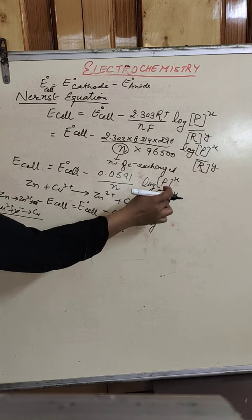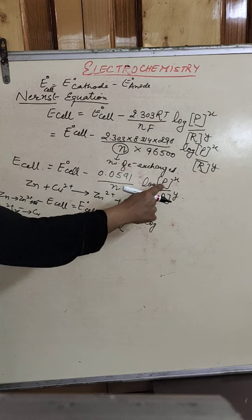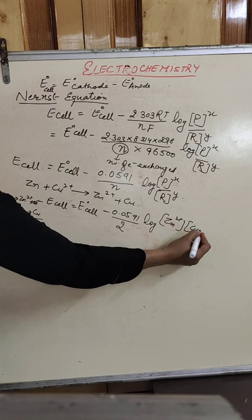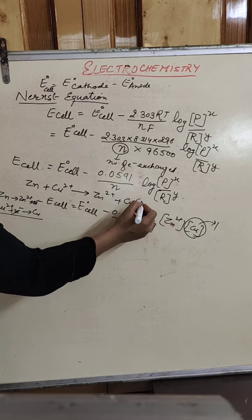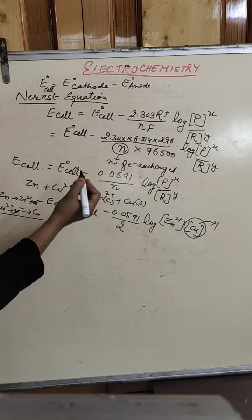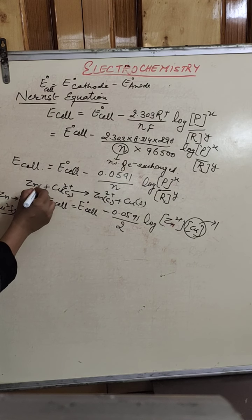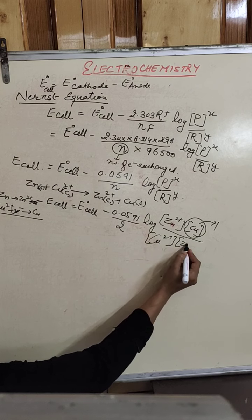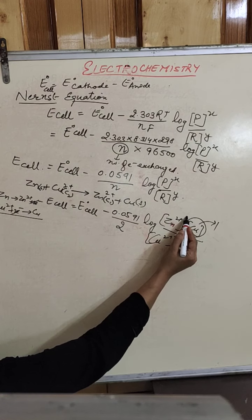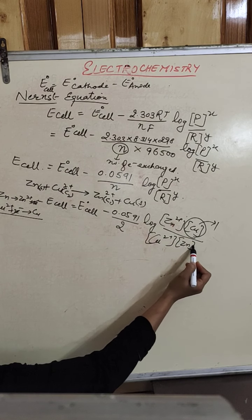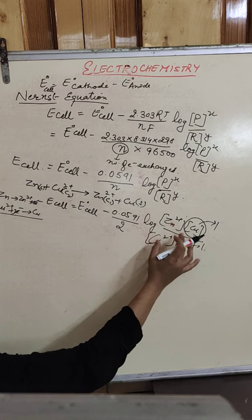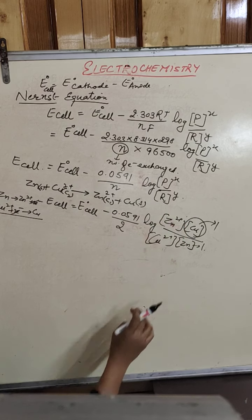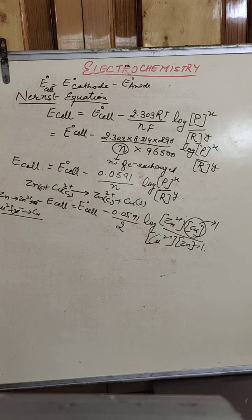In the log term, we place the product and reactant concentrations. The product is zinc ions (concentration C1); copper solid is not included since it is a solid. The reactant is copper ions (concentration C2); zinc solid is also excluded since it is solid. In the Nernst equation, you write concentrations of ions only — not concentrations of solids.